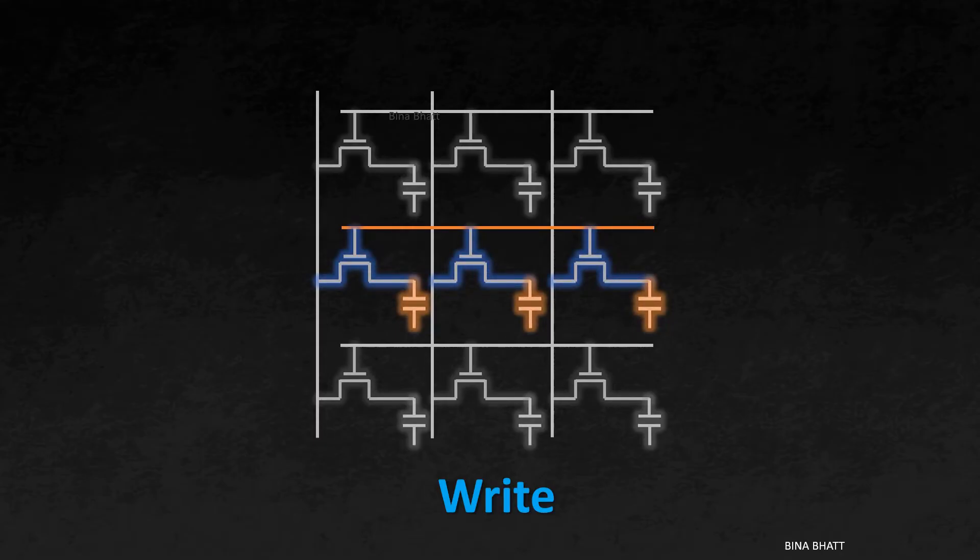Next, the value to be written, which in this case is 1, is placed on the bit line corresponding to that cell. This charges the capacitor and at the completion of the charging process, we get a bit value of 1.